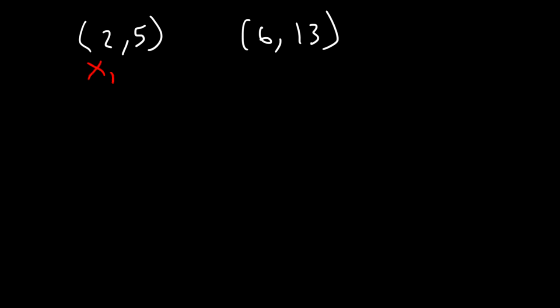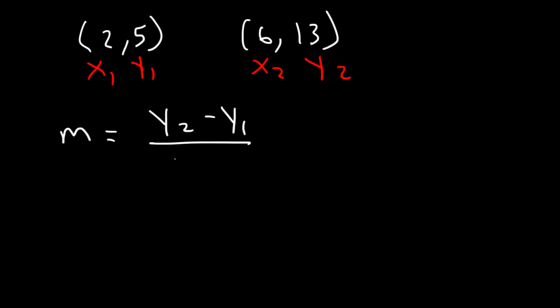Let's call this x1 and x2, and this is going to be y1 and y2. The first number is the x variable, the second one is the y variable. Now we can use this formula to calculate the slope. It's y2 minus y1 divided by x2 minus x1 — basically the change in y divided by the change in x.